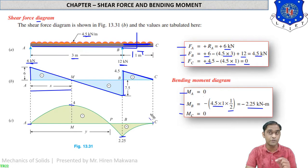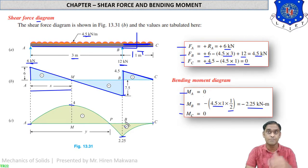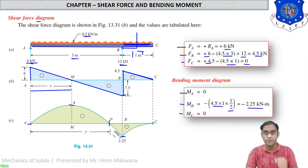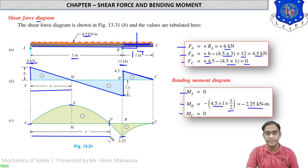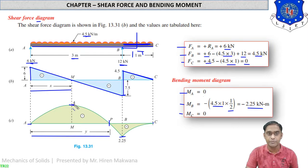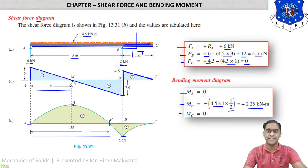The point of contraflexure exists because from A to P the bending moment diagram is positive, while from P to C it is negative. At point P the bending moment changes from positive to negative, so P is the point of contraflexure. The distance from point A to P is Y, which we need to calculate. Our other target is also to find the bending moment at M, which is maximum because the shear force at point M is zero.